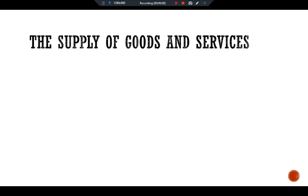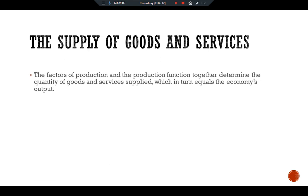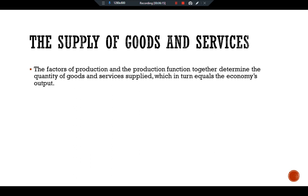The supply of goods and services. The factors of production and the production function together determine the quantity of goods and services supplied, which in turn equals the economy's output. To express this mathematically, the model can be written as Y equals F of K prime and L prime. This means that when we have constant labor and capital, we have constant output. We assume that the supply of capital and labor and technology are fixed, so output Y is also fixed.